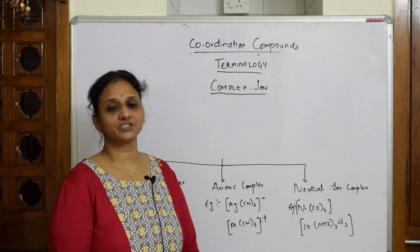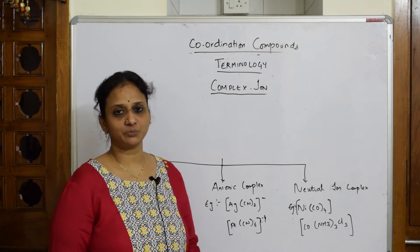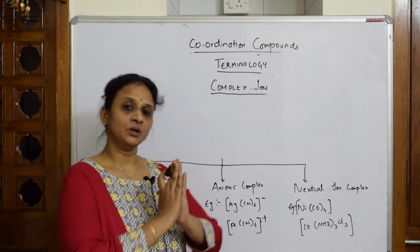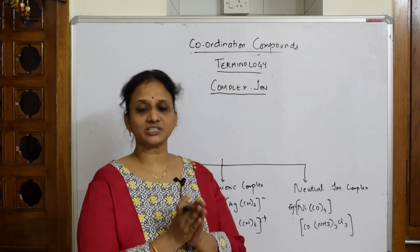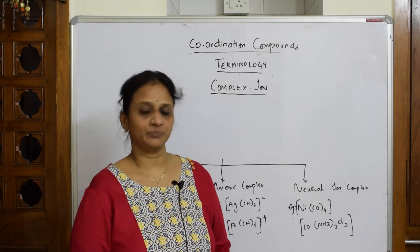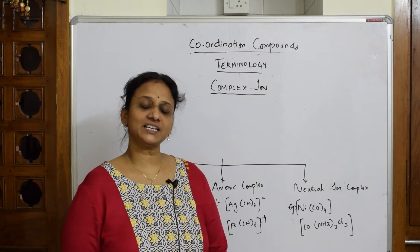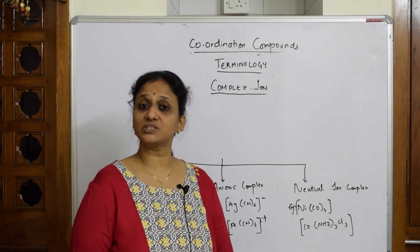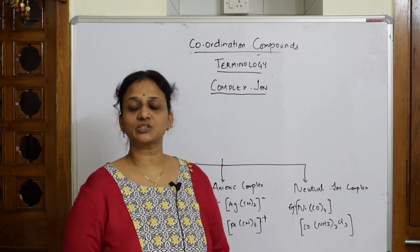Let's start with the terminology involved in coordination compounds. I'll explain the difference between a double salt and a complex compound - one that has a complex ion. Double salts lose their identity, while complex ions do not lose their identity.